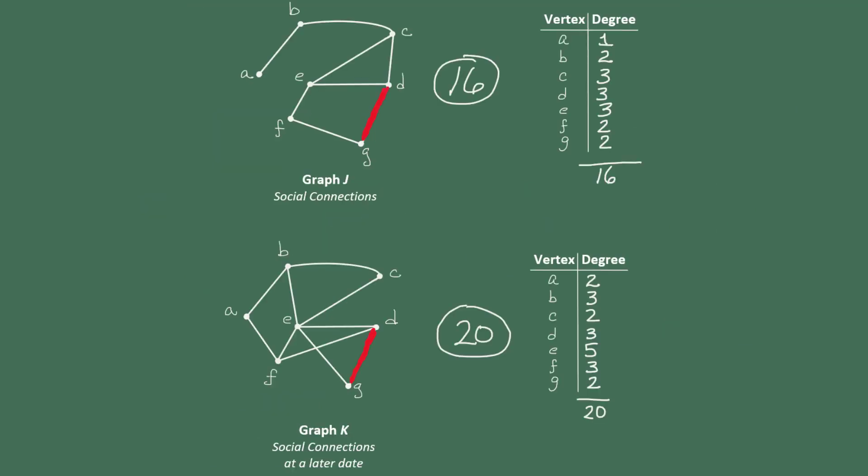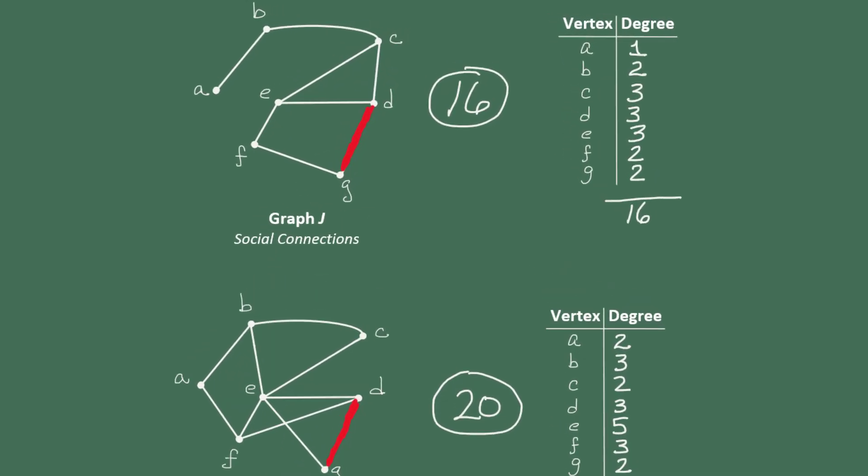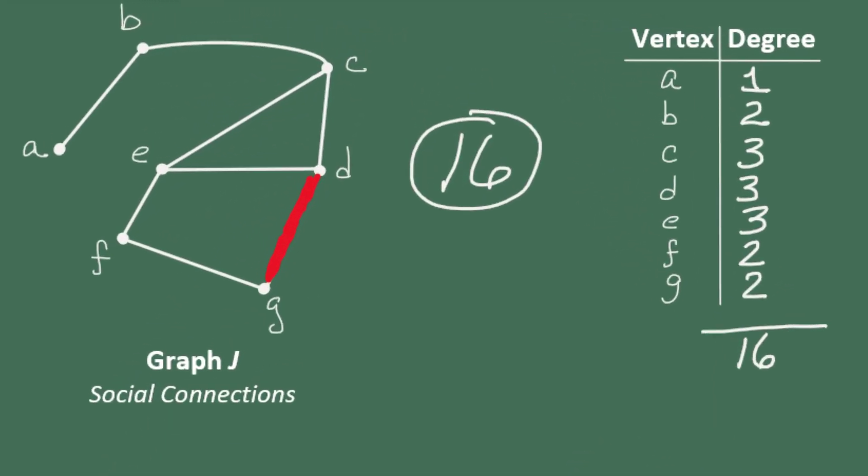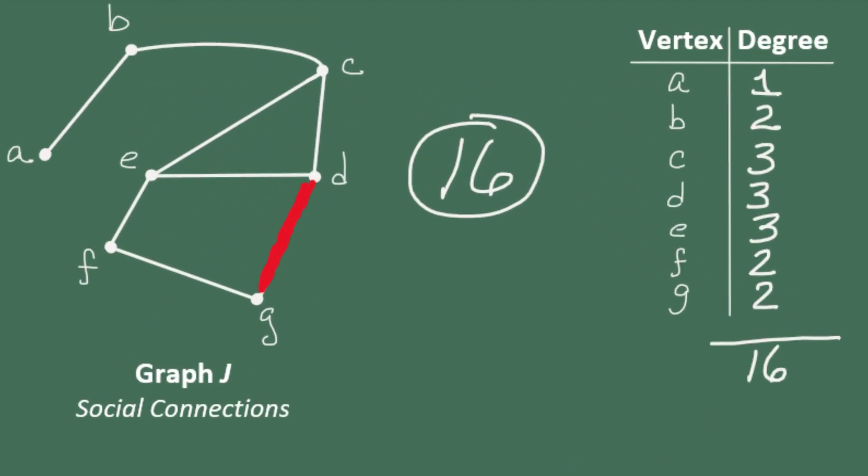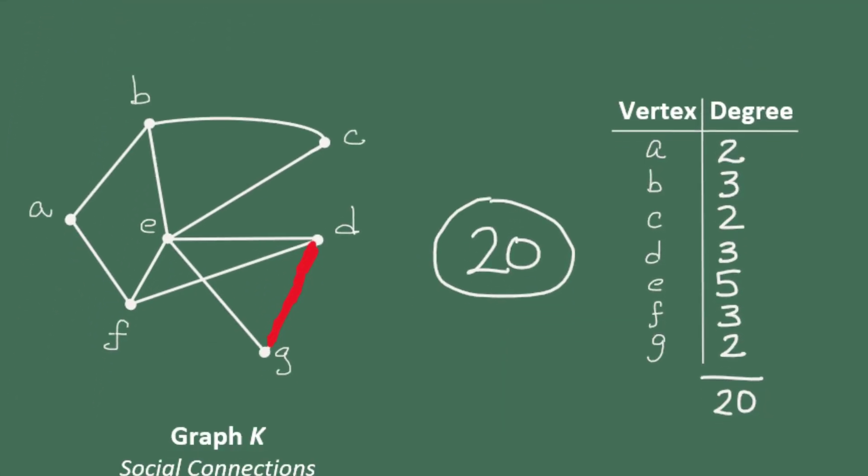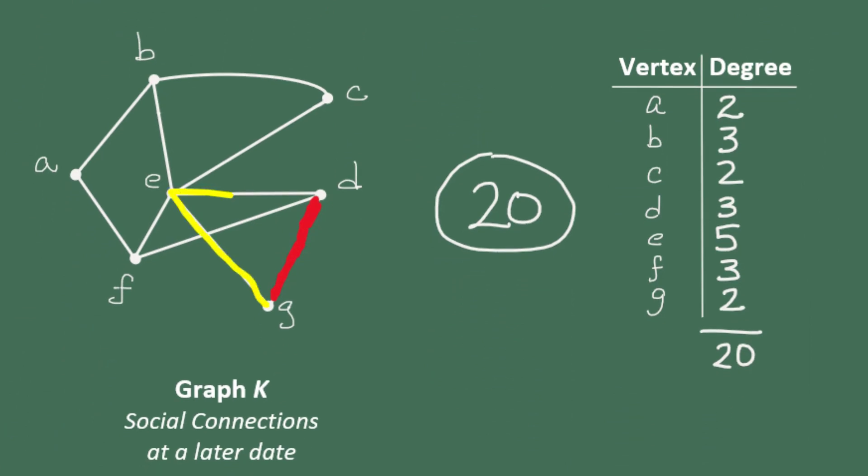Or consider a scenario where G and D lose their connection. So in graph J, when G and D lose their direct connection, in order for G to get the social benefit of networking with D, information has to be passed from G to F to E and then to D and back. So there's a greater number of degrees of separation between them than in graph K where there are only two edges to travel between G and D.